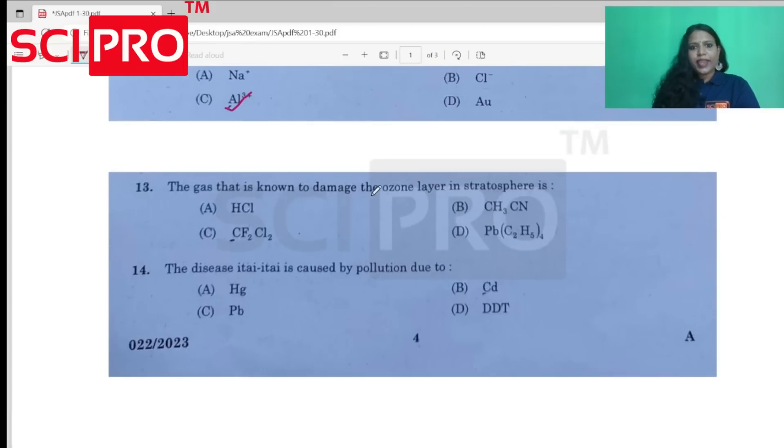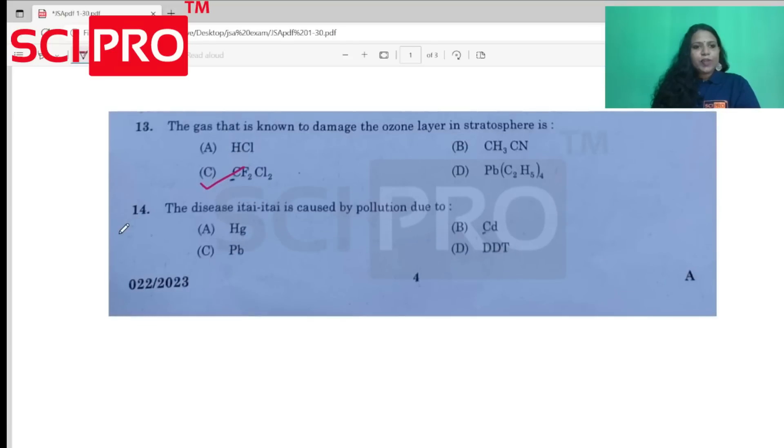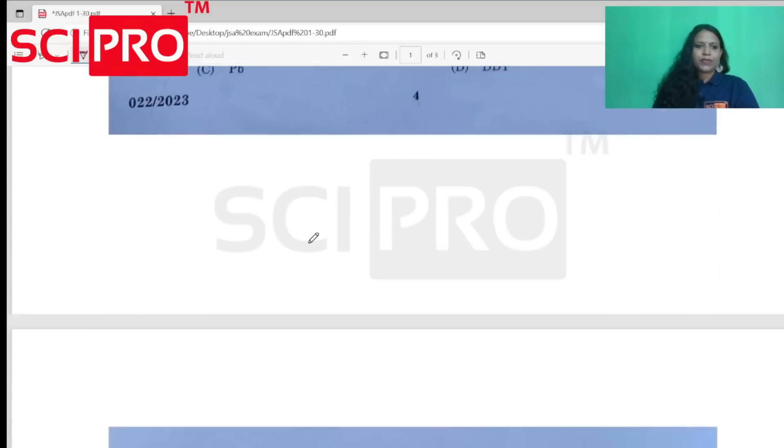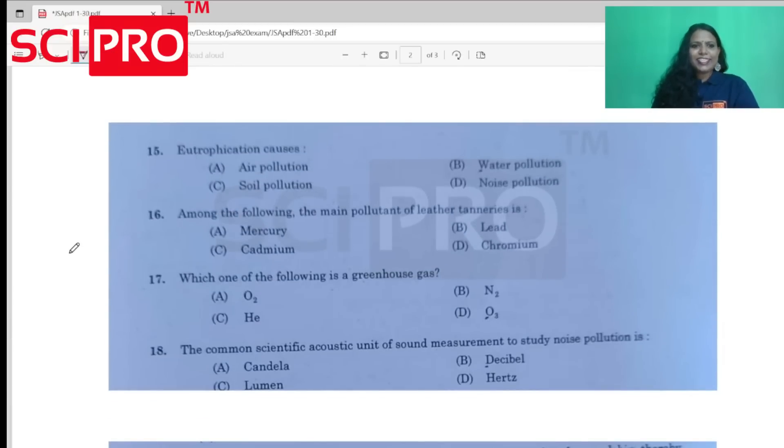Question number 10: The gas that is known to damage the ozone layer in stratosphere is chlorofluorocarbon. Question number 14: The disease is caused by the pollution due to cadmium. Question number 15: Among the following, the main pollutant of leather tanneries.